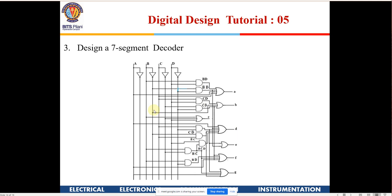This is called a 7-segment decoder: you have 4 binary-coded inputs and decode them to drive the 7-segment display with several individual output lines. We will learn about decoders today in the theory class. Decoder means the input is encoded in binary form and the output is individual lines — that is what decoder means.